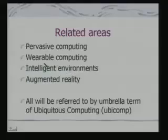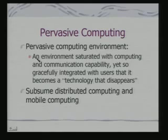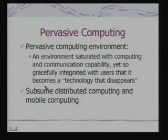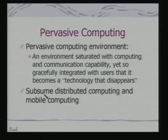All these can be grouped together under the umbrella term of ubiquitous computing. Pervasive computing can formally be defined as an environment saturated with computing and communication capability, yet so gracefully integrated with users that it becomes a technology that disappears. It subsumes distributed computing and mobile computing, and the basic technology enabling all these things is embedded systems.